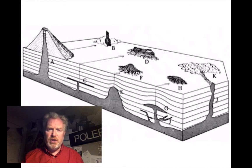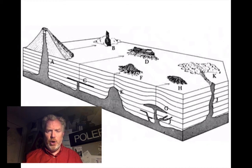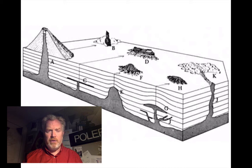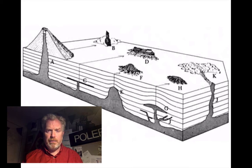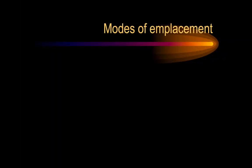What we're looking to do is identify which features here are the different types of igneous intrusion. Igneous rocks on this diagram are shaded in grey. Let's have a look at what we're talking about.